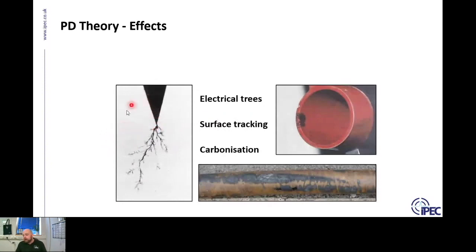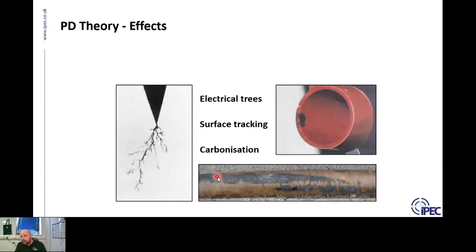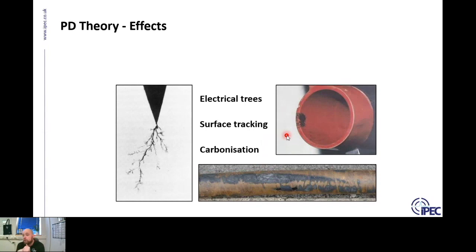A typical electrical tree in solid insulation is shown — if you have a defect, over time this electrical tree forms and eventually leads to failure. The bottom image shows an oil cable where PD occurring in the pure cable insulation caused a carbonization effect. Stripping back a few layers of a cable in Chatham, Kent, we can see where PD was occurring before the cable was repaired. On terminations, PD can occur from contaminated insulation, and you might find surface tracking and carbonization evidence on the outside of termination components.